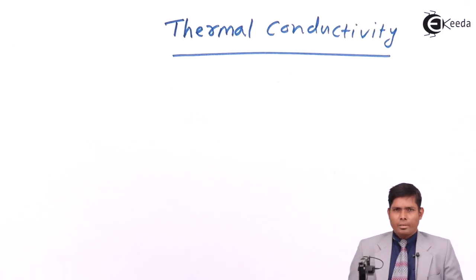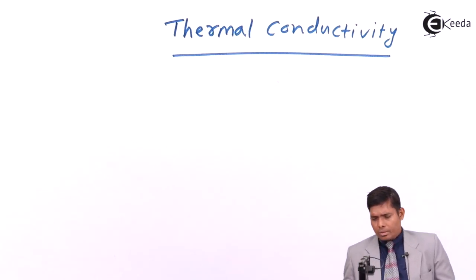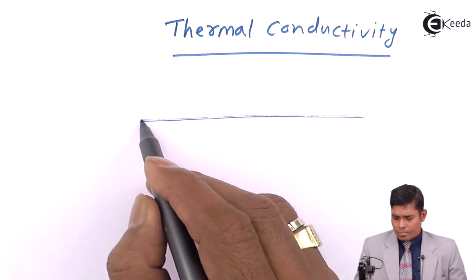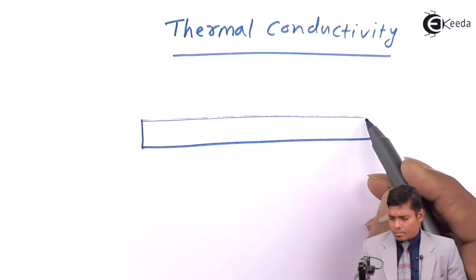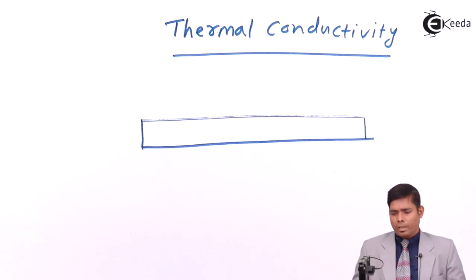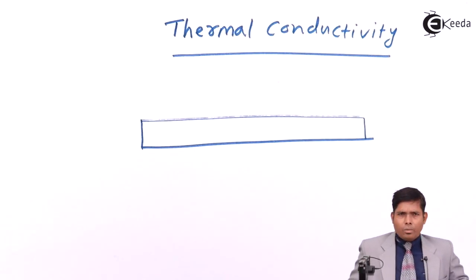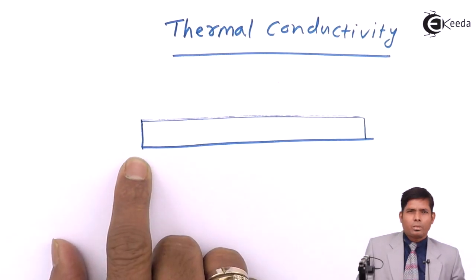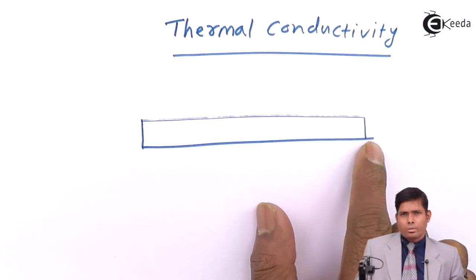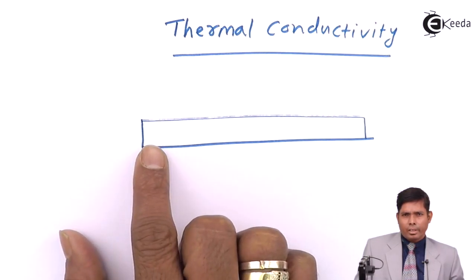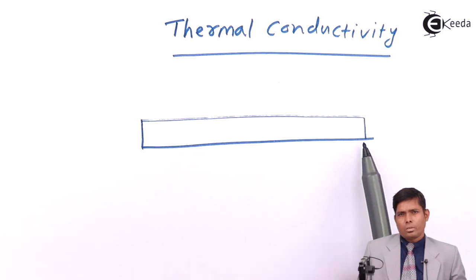We will consider a solid rod made up of iron. What we are going to do is heat one end of the rod and see what happens to the other end. When you start heating it, the heat will transfer from this end to the other end of the rod.